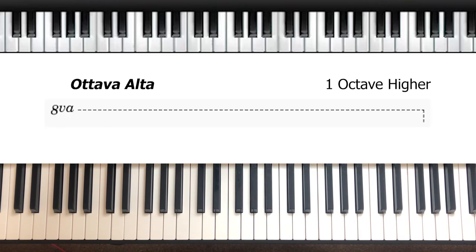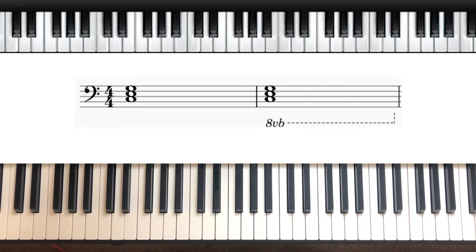You remember that octave sign we used earlier to play the treble higher? There's also one for the bass clef if you would like to go an octave lower. To do this, we draw the dotted line underneath the stave, and the key difference between going lower and higher with the octave is here.